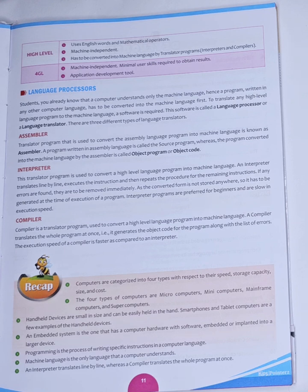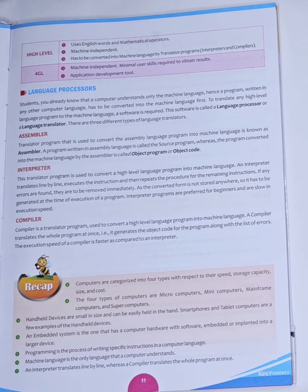In order to convert any high-level language into machine language, we need a translator. There are three different types of translators: assembler, interpreter, and compiler. The difference between interpreter and compiler is that interpreter translates the program line by line, whereas compiler translates the whole program at once.